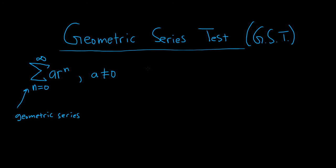So there is the test. The test says the following. One, if the absolute value of r is less than one, then the series will converge. Two, if the absolute value of r is greater than or equal to one, then the series diverges.